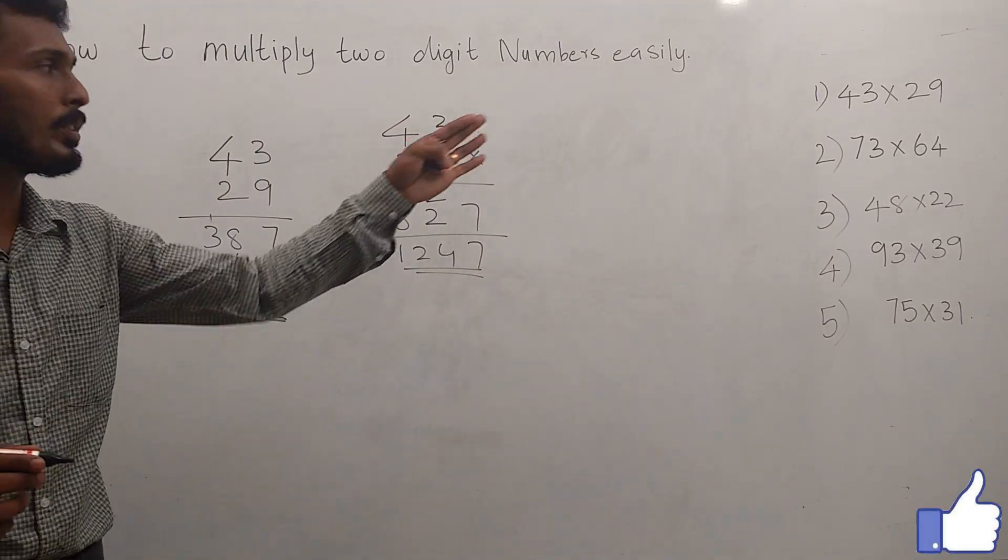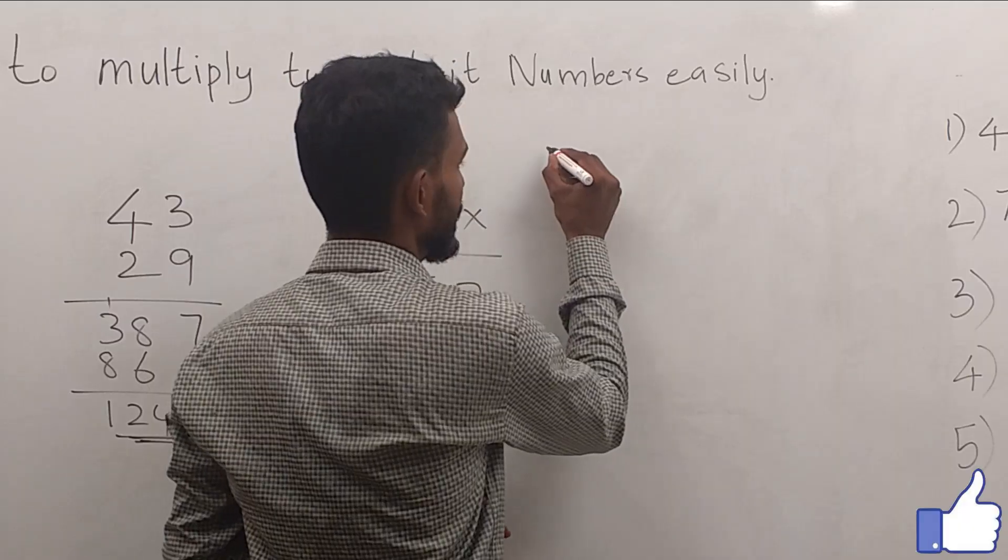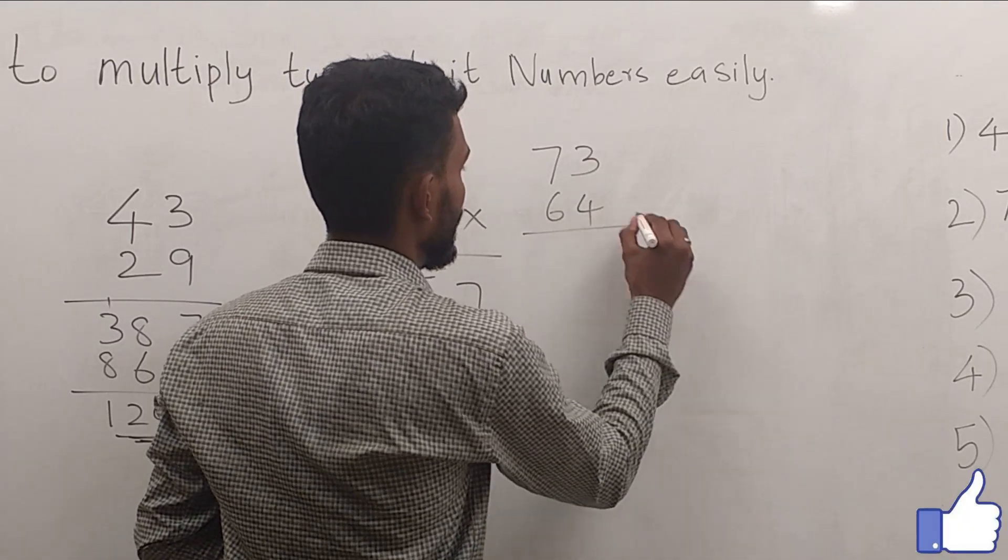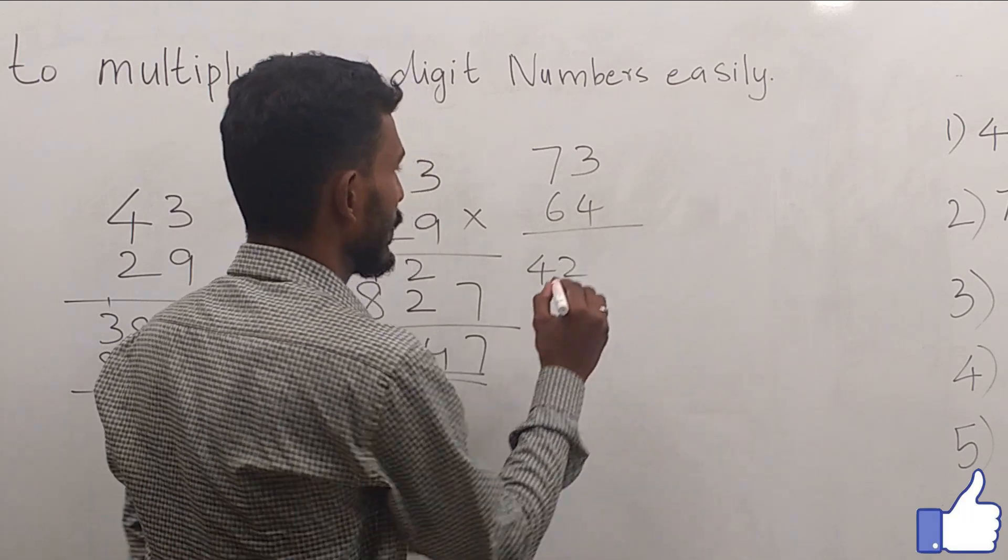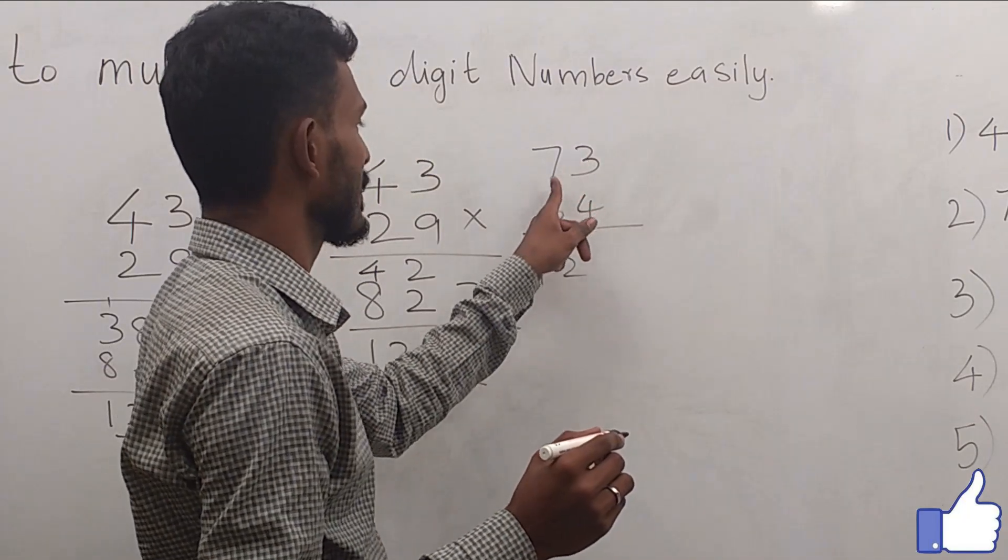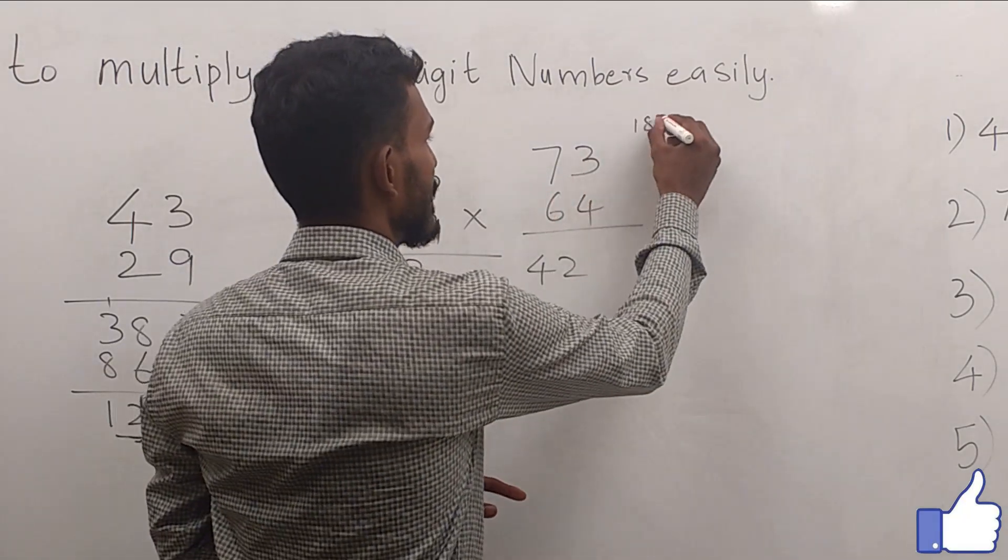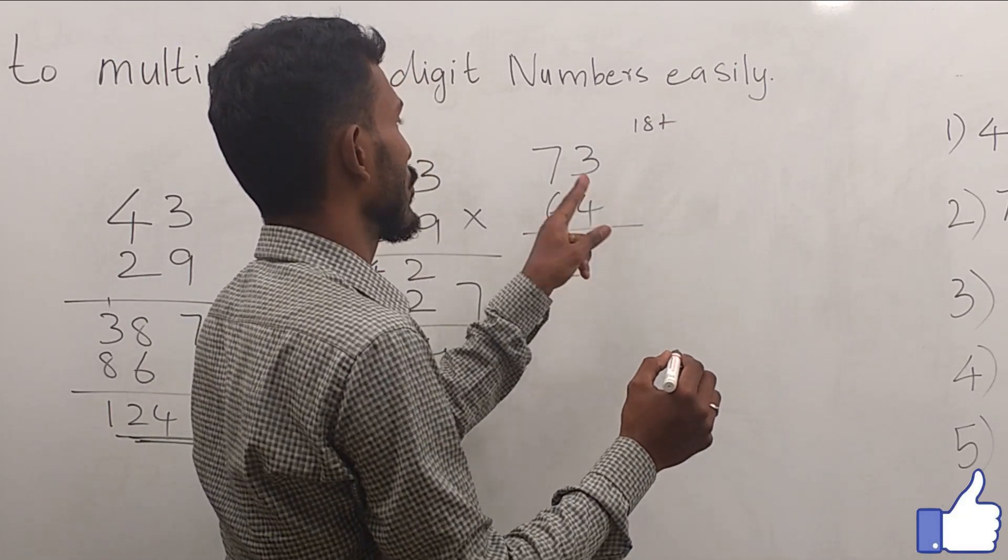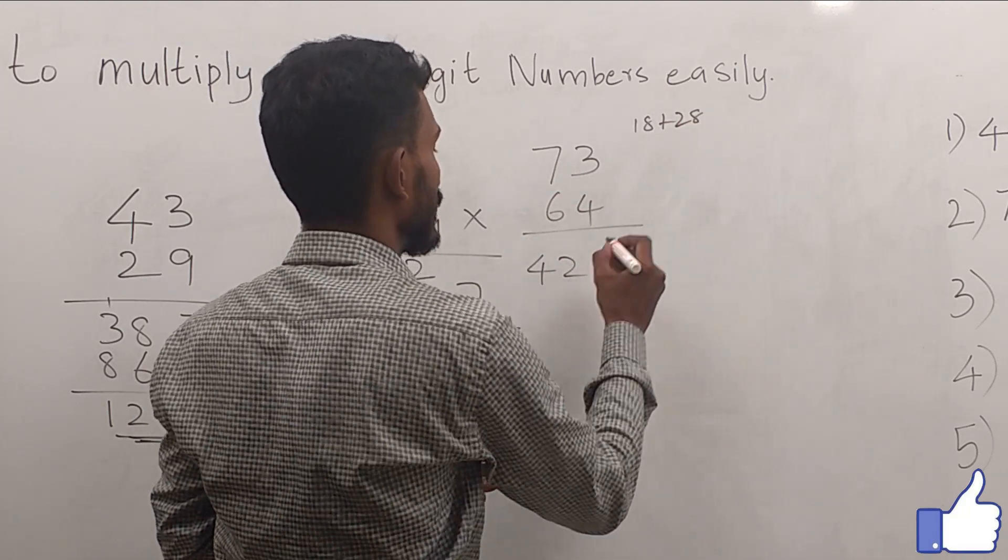Similarly, we can do this for the next one. 73 × 64. 7 × 6 = 42. 6 × 3 = 18, plus 7 × 4 = 28, which gives us 46.